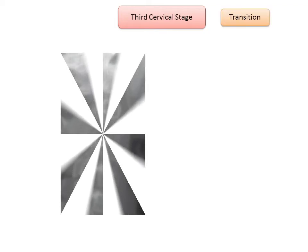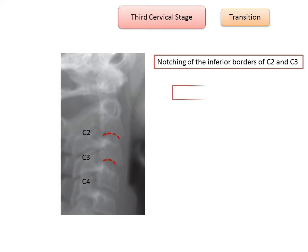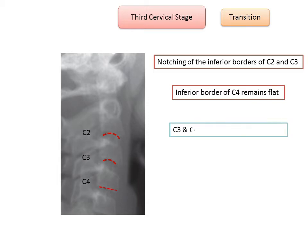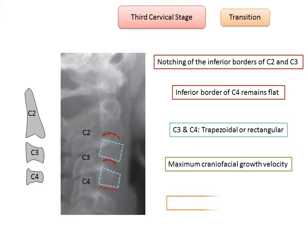The third cervical stage, CS3, corresponds to the period of transition. It is characterized by notching of the inferior borders of C2 and C3, whereas C4 remains flat. At least one of either C3 or C4 would retain a trapezoidal shape, and the other would assume a rectangular horizontal shape. At this stage, maximum craniofacial growth velocity is anticipated. Twenty-five to sixty-five percent of pubertal growth remains.